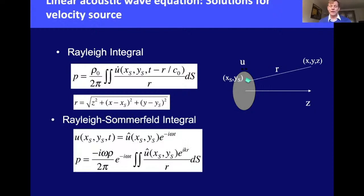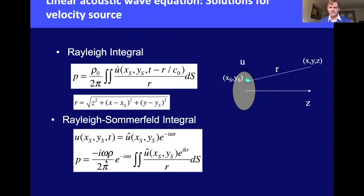When the wave is time-harmonic at a single frequency, the source condition has time dependence e^(−iωt). Substituting into the Rayleigh integral yields the Rayleigh-Sommerfeld integral, where the time derivative of velocity gives an iω factor. This is again a surface integral allowing calculation of pressure anywhere in space.